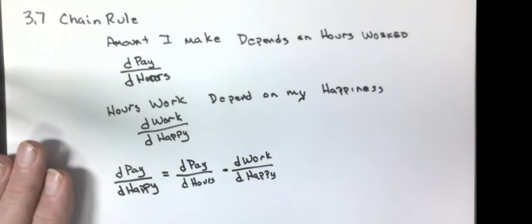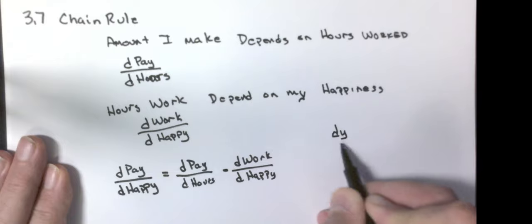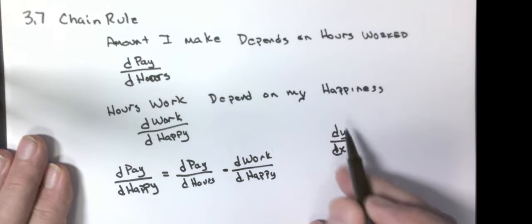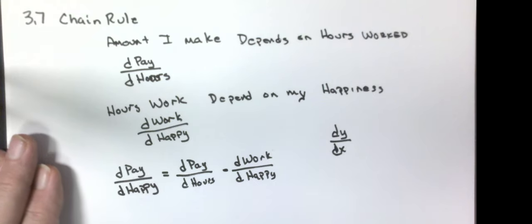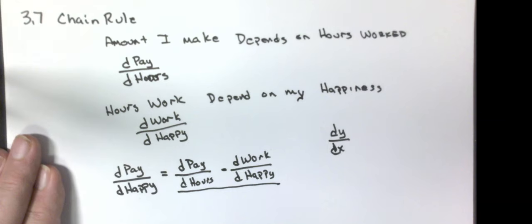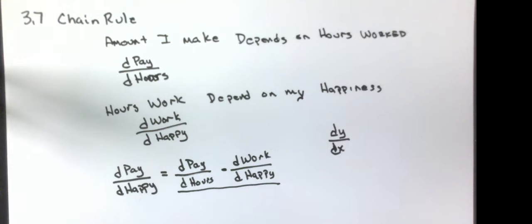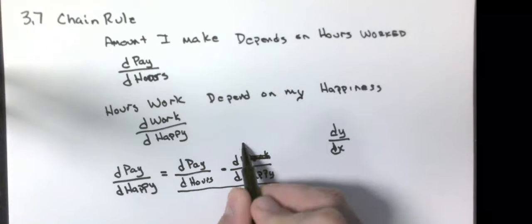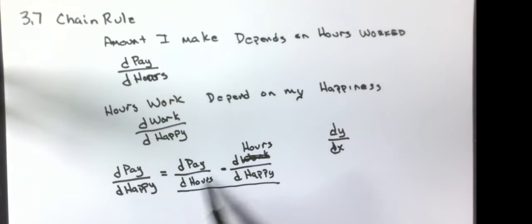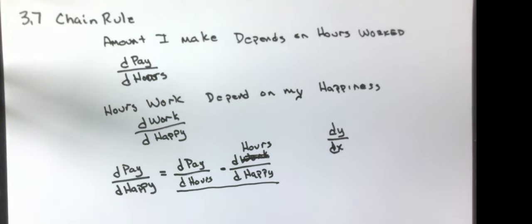We have not thought about dy/dx as a fraction. This is the first time that you can actually see things as fractions. Notice these hours cancel, so I actually get pay over happiness. That is one of the forms of the chain rule that I can use.